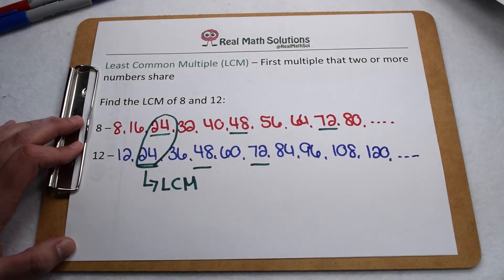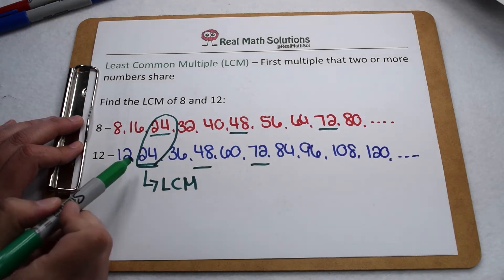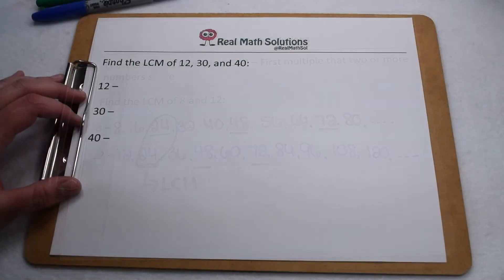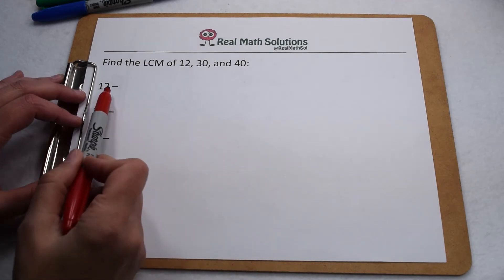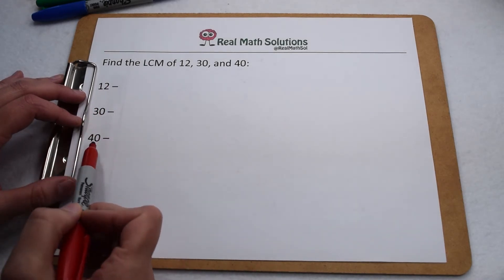So that tells us the least common multiple of 8 and 12 is going to be 24. We can also find the least common multiple of more than 2 values. Here we want to find the least common multiple of 12, 30, and 40.